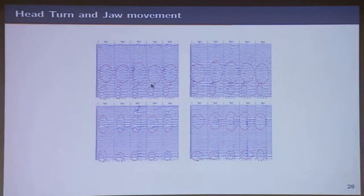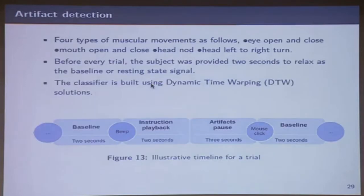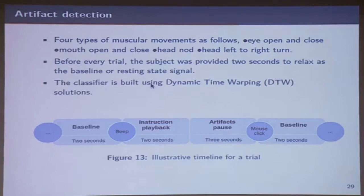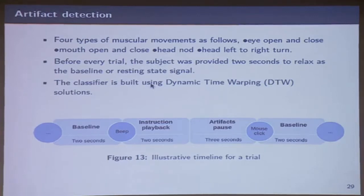We did a very controlled experiment — we asked people to keep quiet for two seconds, then an instruction is given: now blink your eyes, close your eyes, open your eyes, move your head, and so on. We record the artifact, then ask the person to be silent. Three seconds are given within which the person should do the eye blink or whatever — you can do multiple eye blinks. We exercised these and tried to use a dynamic time warping algorithm — some interesting results, and we were able to detect it in a single trial.